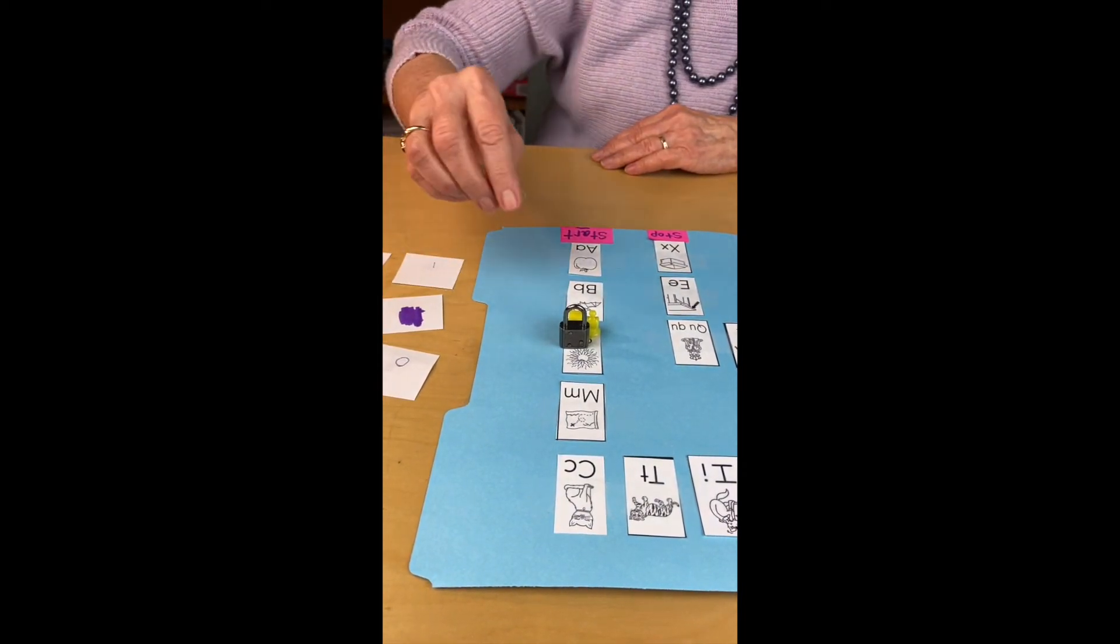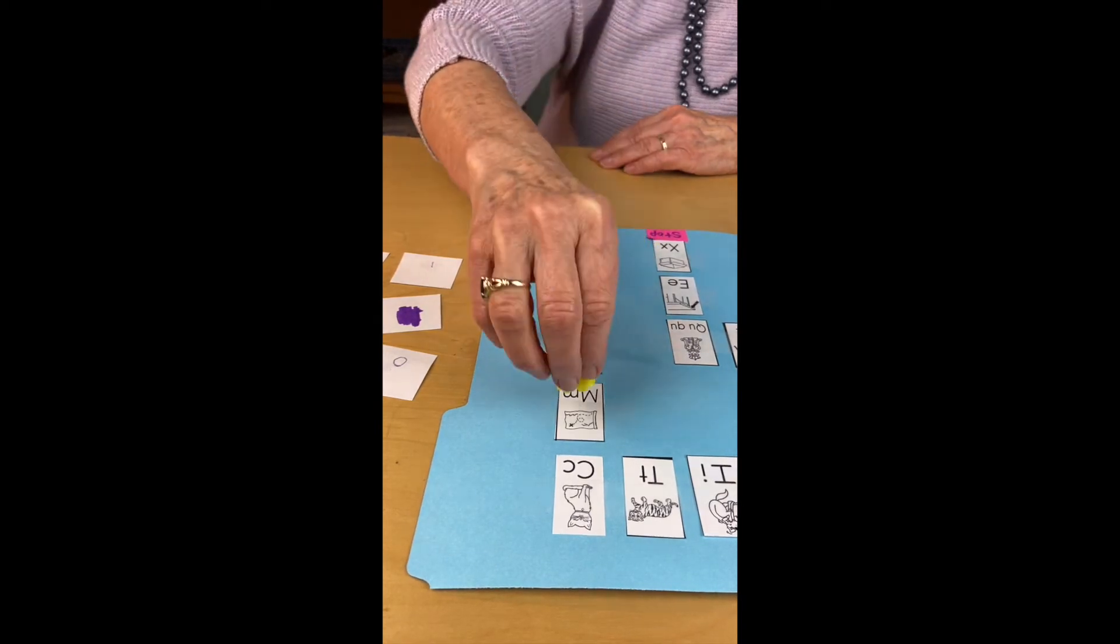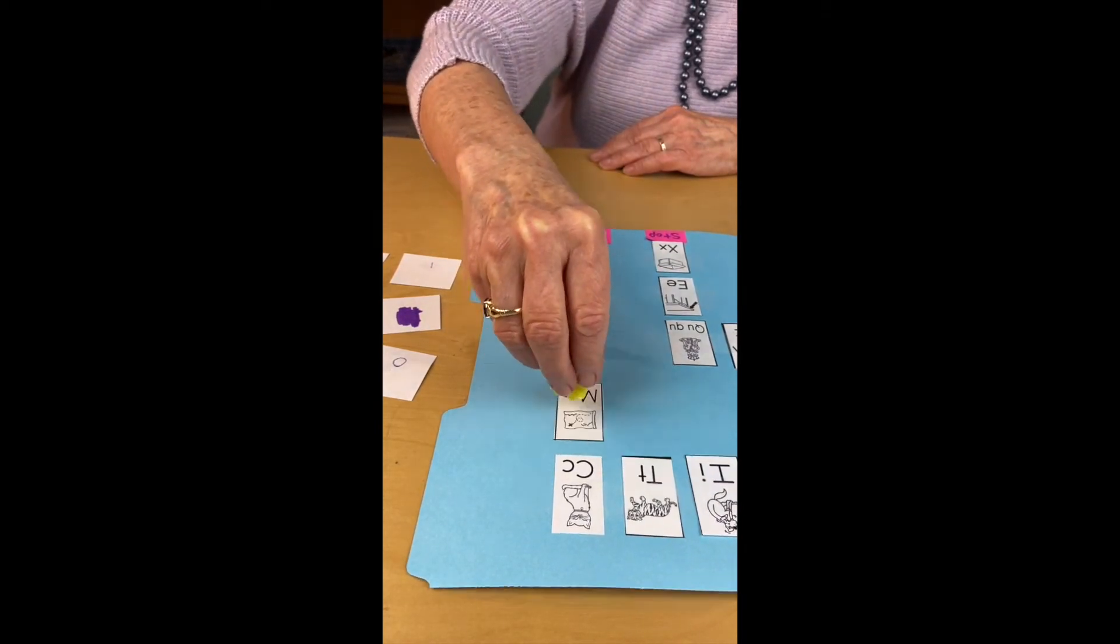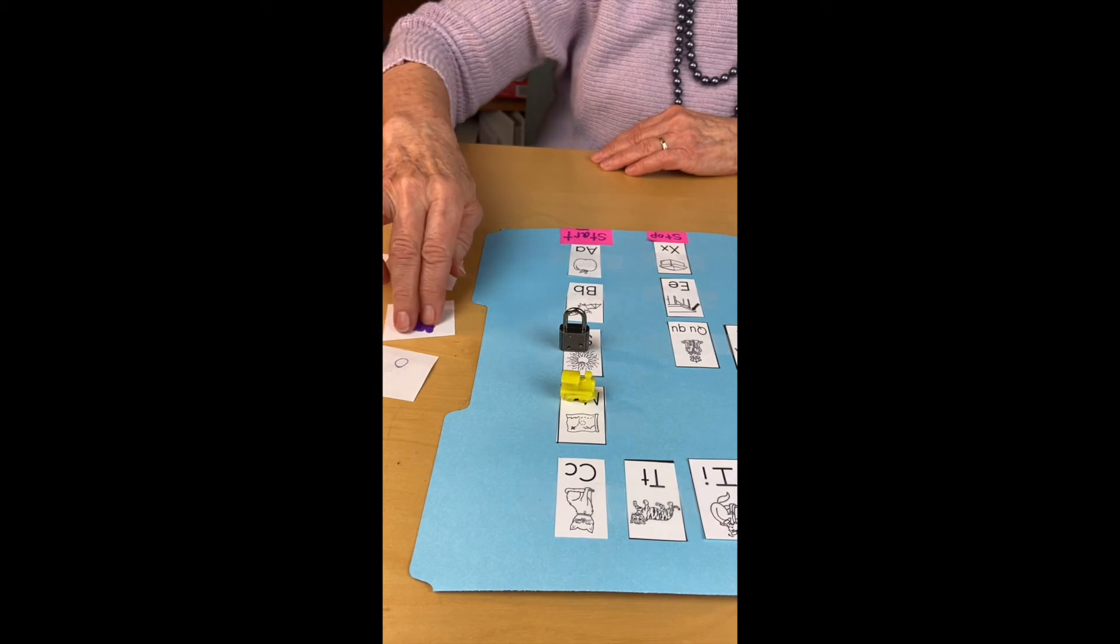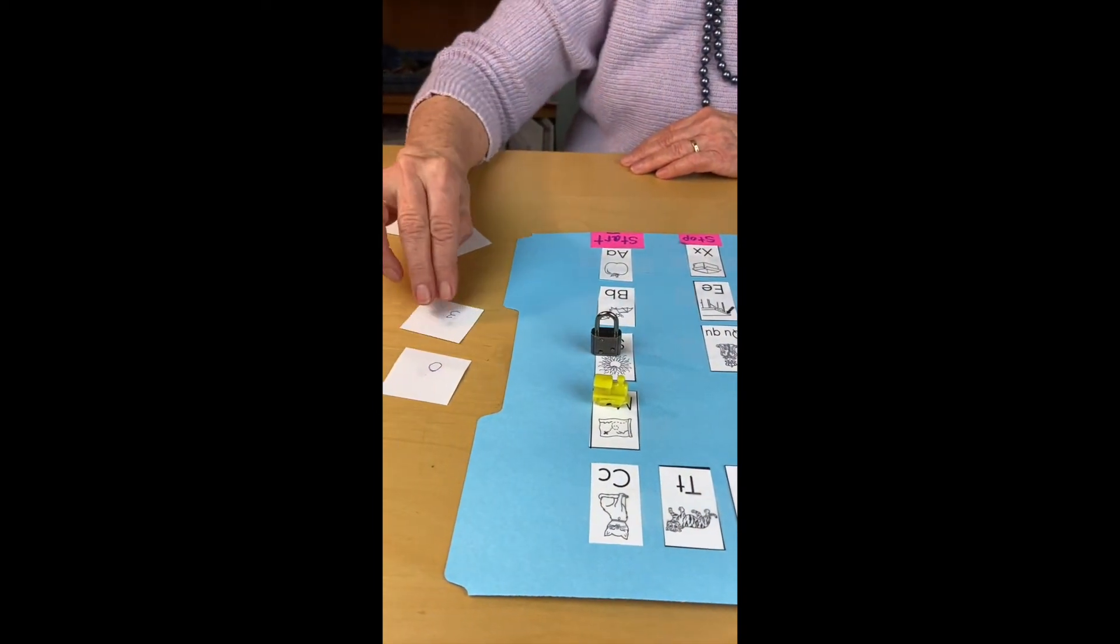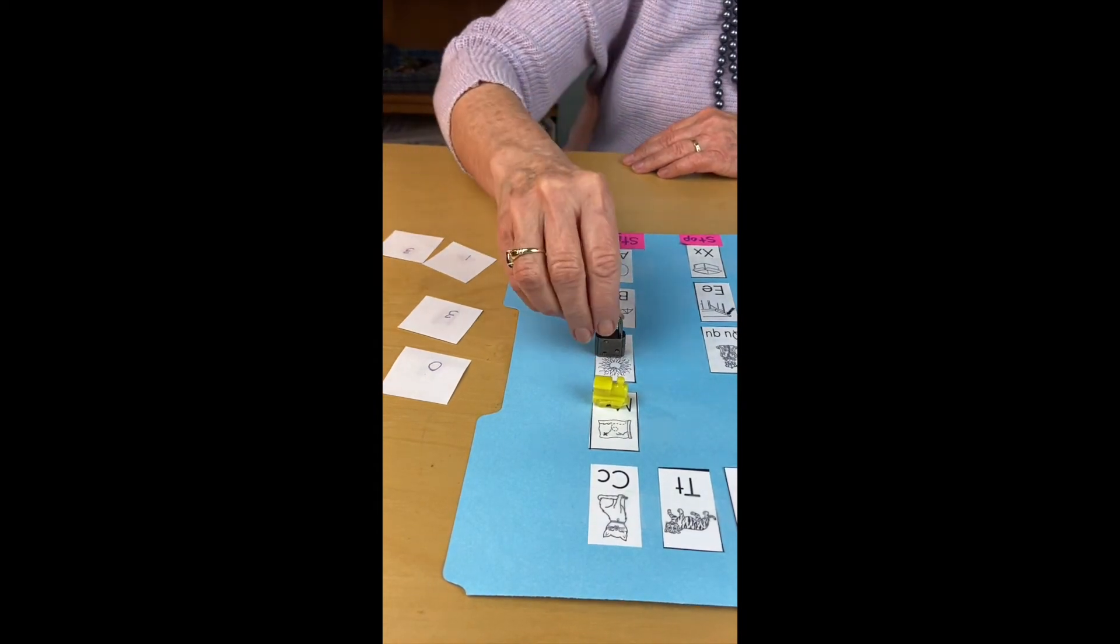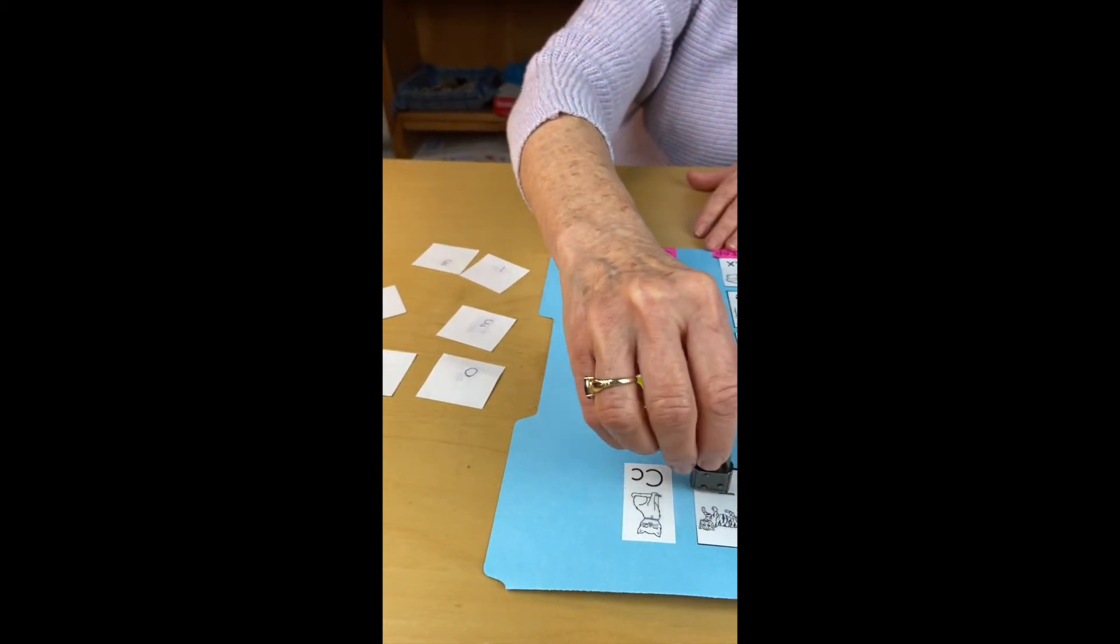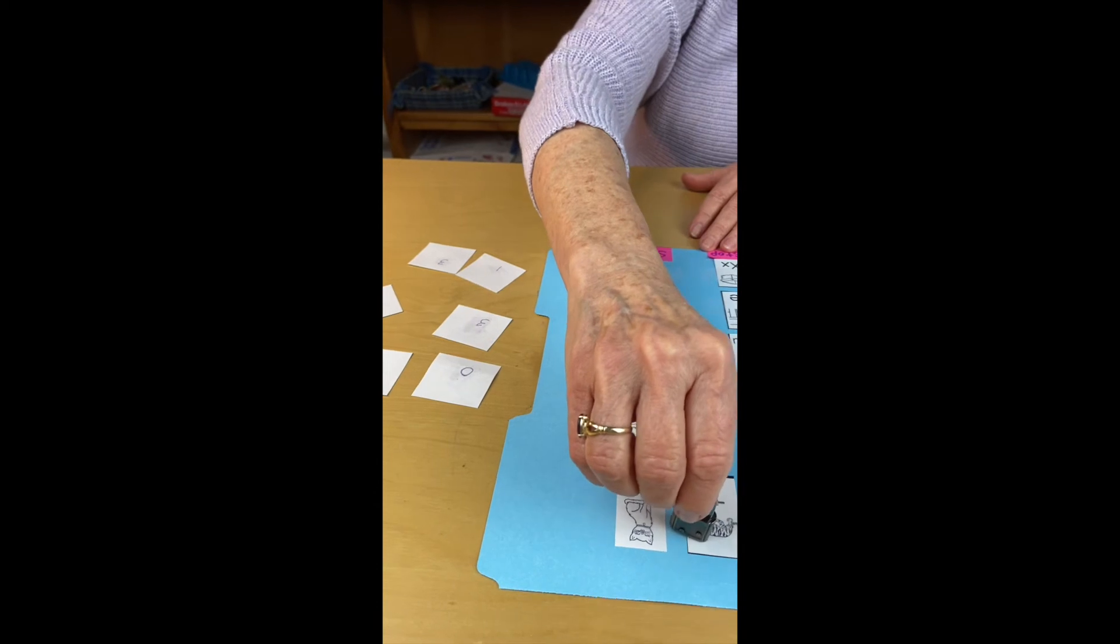One hop. M, map, m. Three hops. One hop, two hops, three hops. T, tiger, t.